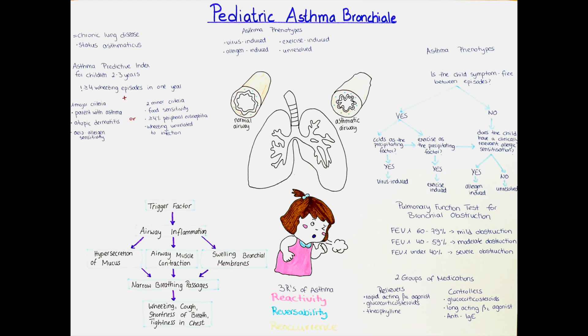In the next part, I would like to talk about the different pediatric asthma phenotypes. Asthma phenotypes help to differentiate the different causes and triggers that a child may experience. On the poster you can see a chart that is used to differentiate between virus-induced asthma, exercise-induced asthma, allergen-induced asthma, and unresolved asthma. The different phenotypes are differently common in the different pediatric age groups.